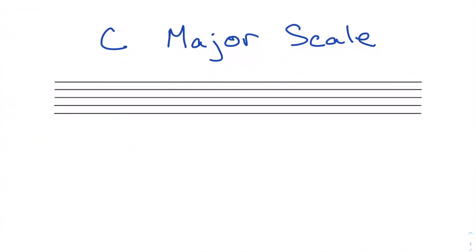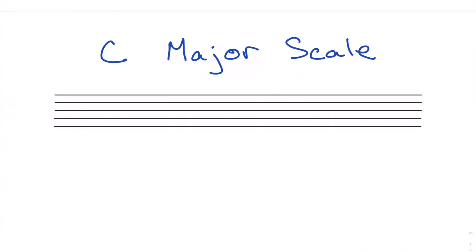So when it comes to constructing major scales on the staff, let's start with C major. I'm going to write out all the notes of the C major scale. So I've got C, D, E, F, G, A, B, C. And in the case of the C major scale, there's no sharps or flats. So that's done. That's my C major scale.